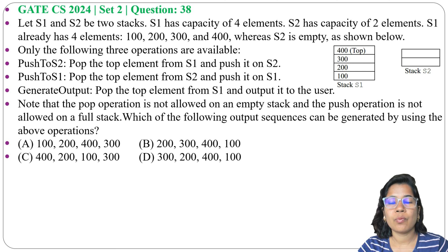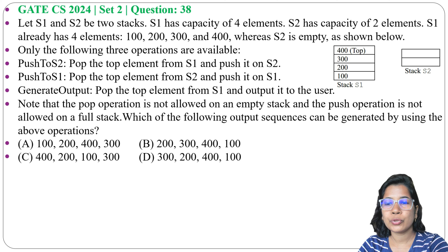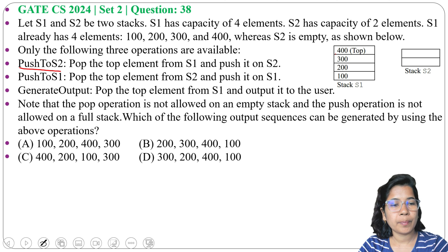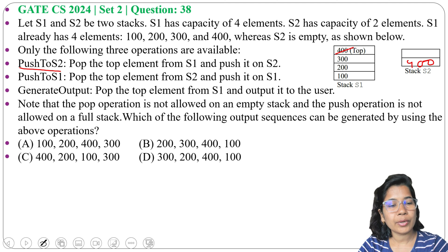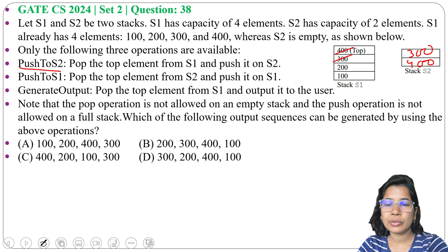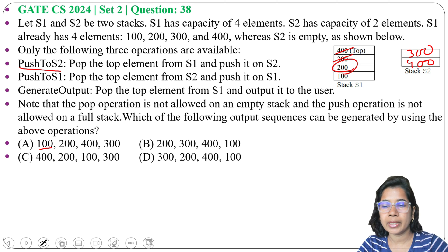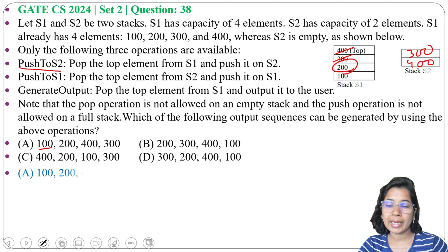We need to check each option one by one. Option A: 100, 200, 400, 300. First we do push to S2, popping 400 from S1 and pushing to S2. Next, push to S2 again, popping 300 from S1 and pushing to S2. Now if we generate output, it will generate 200, not 100. So 100 cannot be popped before 200. That's why option A is not possible.